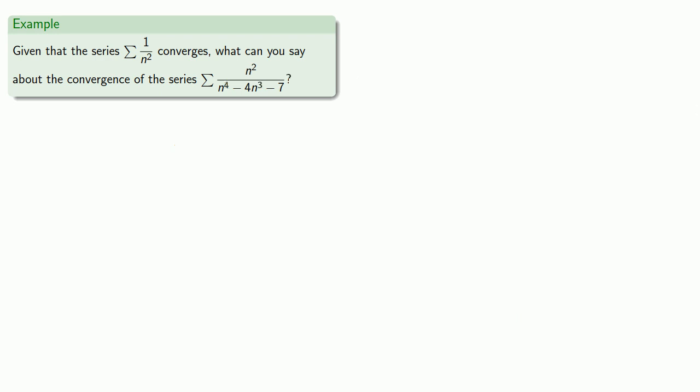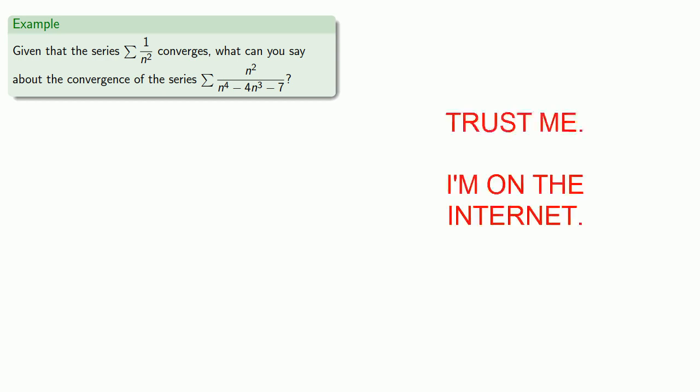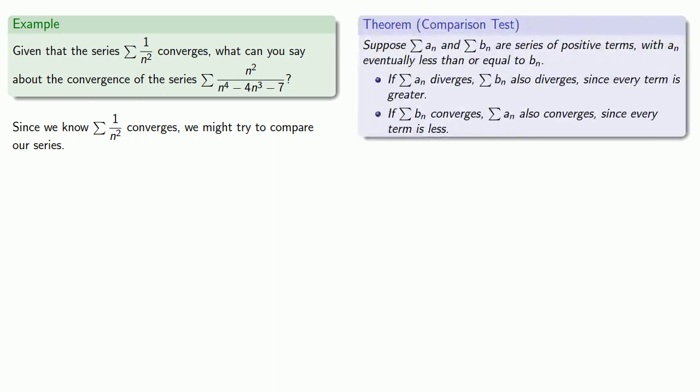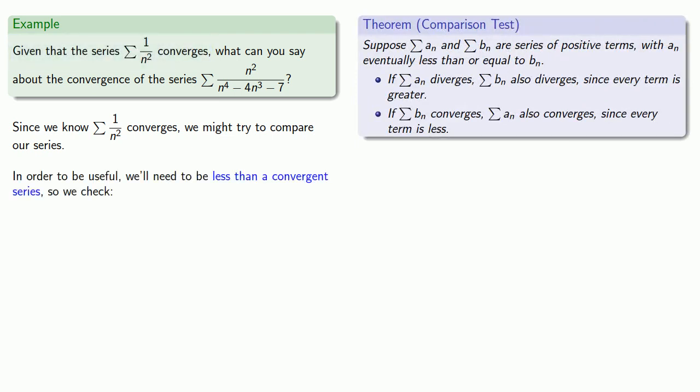Let's try to find the convergence or divergence of the series whose terms are n squared over n to the 4th minus 4n cubed minus 7. First, we should check that the terms of this series do actually go to 0, which means the nth term test is inconclusive. Since we know the series whose terms are 1 over n squared converges, we might try to compare the two series.